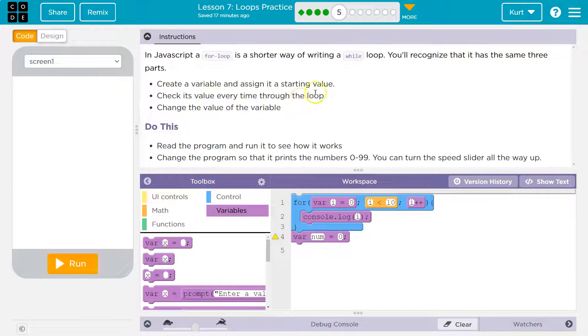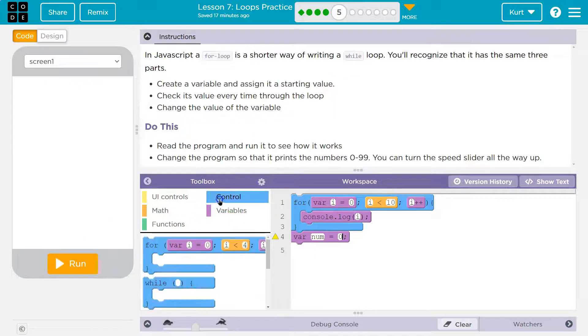Check its value every time through the loop. They want us to use a while loop, so I'm going to go to Control. We have a for right here, but this time we'll use while. In our while loop, I'm going to put something to check its value—I'll say while num is less than 10.